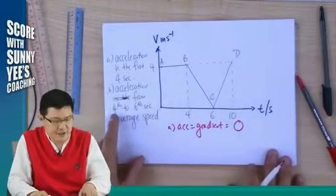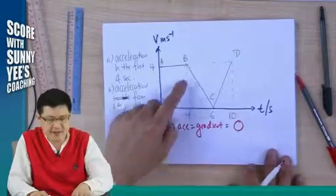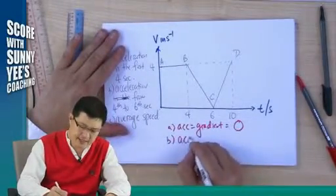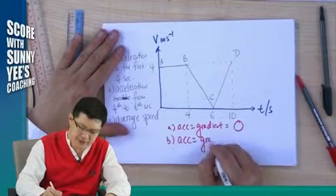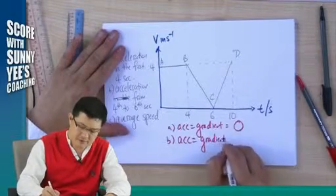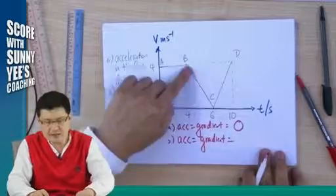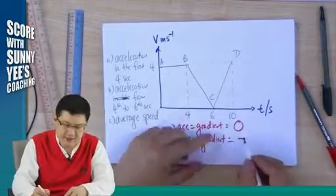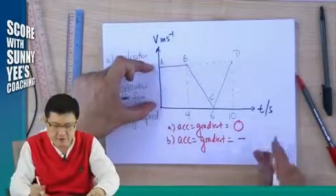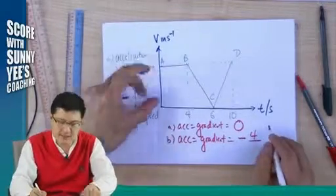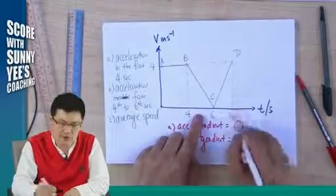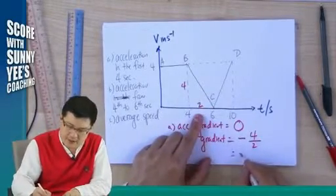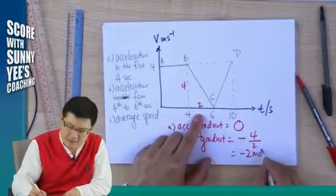B, the acceleration from 4 seconds to 6 seconds. And the acceleration is your gradient. And your gradient for this line is this over this. Negative is a negative gradient. So your y-axis is 4. Your x-axis is 2. 4 to 6 is 2. This is 4. This is 2. So it is negative 2 meter per second square.